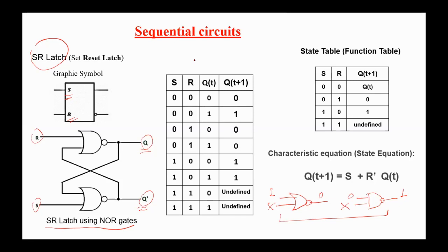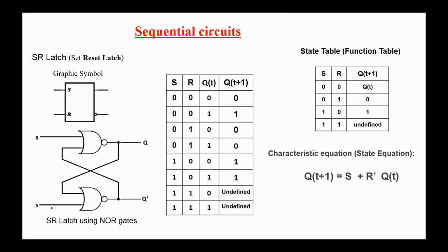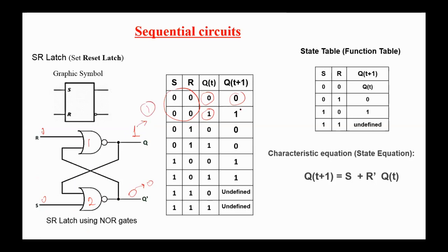Here is the characteristic table for the SR latch. If S and R are both zero, there are two cases. If Q(t) was zero, the output of the second NOR gate will be one, so zero NOR zero gives one — making Q(t+1) zero. If Q(t) was one, the output of the second NOR gate will be zero, and zero NOR zero gives one — so Q(t+1) will be one.